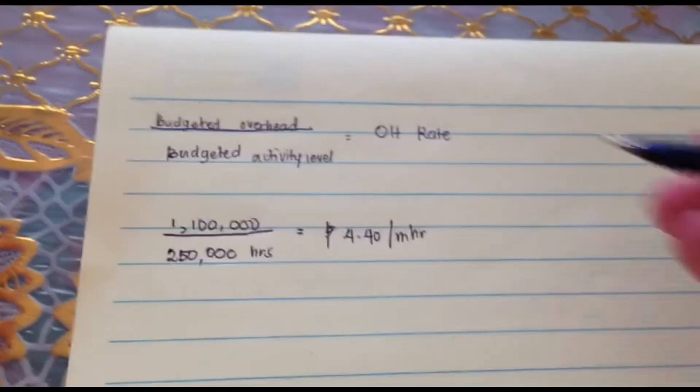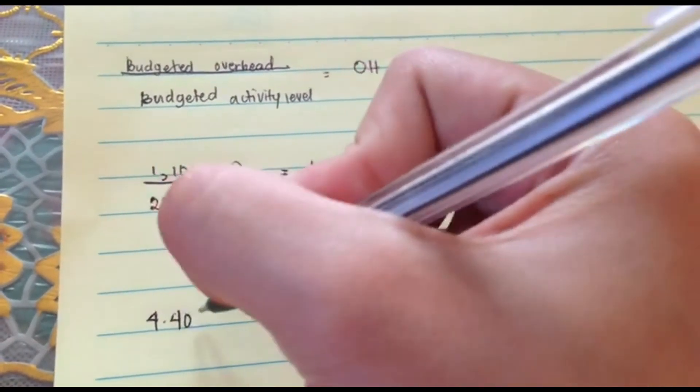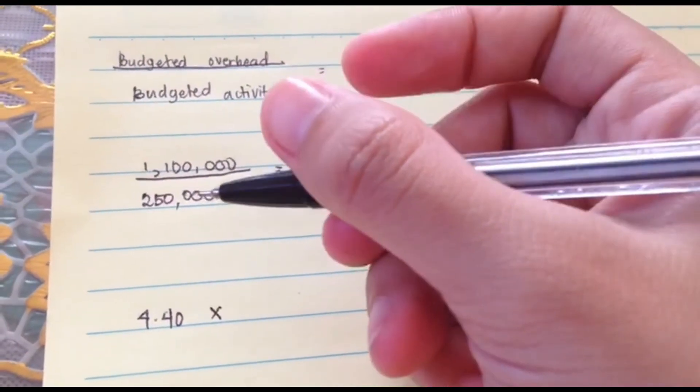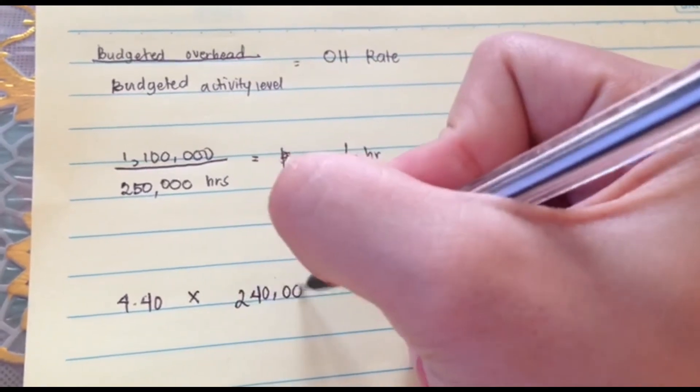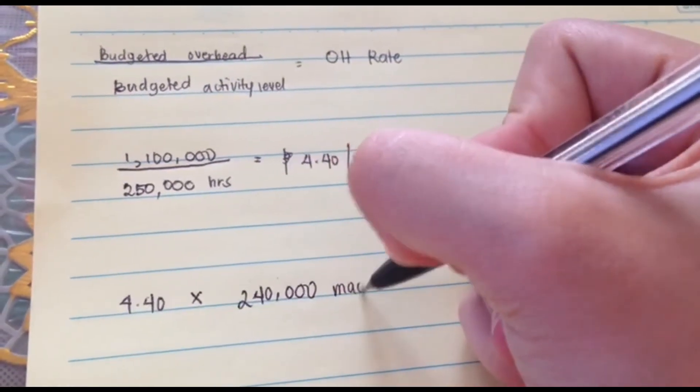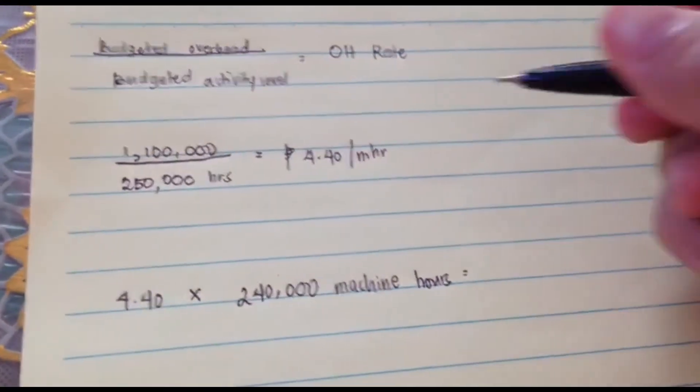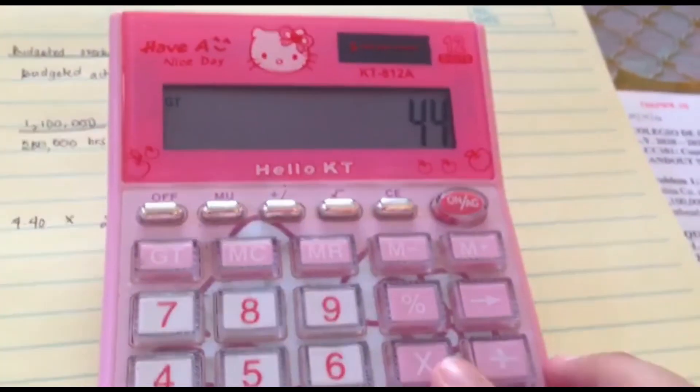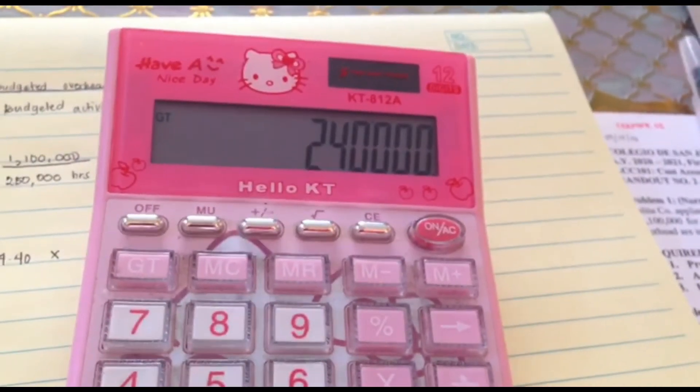For number two, the amount of applied overhead for the current year, that is 4.40 multiplied by 240,000 machine hours. And that is equal to 1,056,000 pesos.